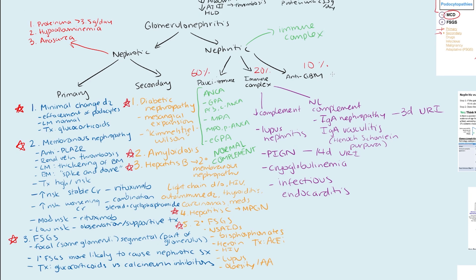The last category is anti-GBM syndromes. One thing to note is there's about 20% ANCA overlap in these cases, so you want to get ANCA serologies anyway because this can predict recurrence. If you have anti-GBM disease with lung involvement, that's called Goodpasture syndrome. Be careful not to confuse this with Alport syndrome, which is a type IV collagen mutation leading to hearing loss and a nephritic picture — but it's actually not one of the anti-GBM mediated causes. It's a basement membrane problem due to the type IV collagen mutation, which also affects the ears.